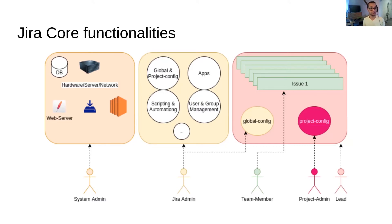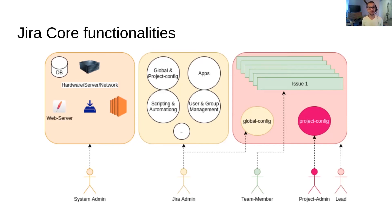At the project level you have three roles. You have a project leader who is responsible for the project from an organizational point of view. Then you have a project admin who is responsible for the local configuration of the project — for example, renaming the project. Then you have team members who are responsible for the data: creating tickets, updating information, storing information, retrieving reports, and working with the system.